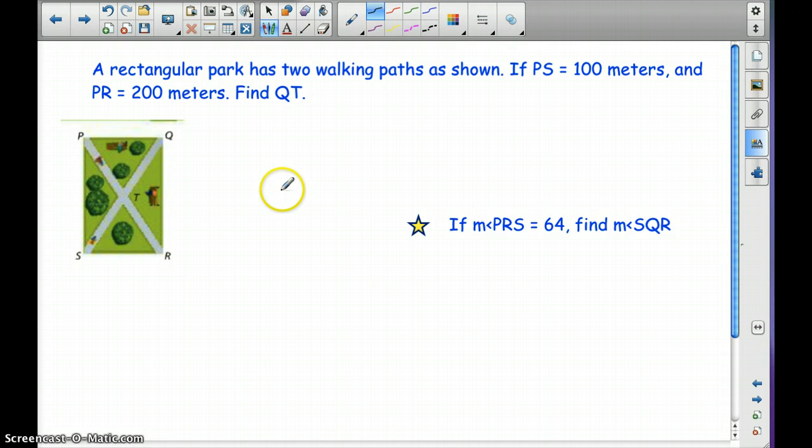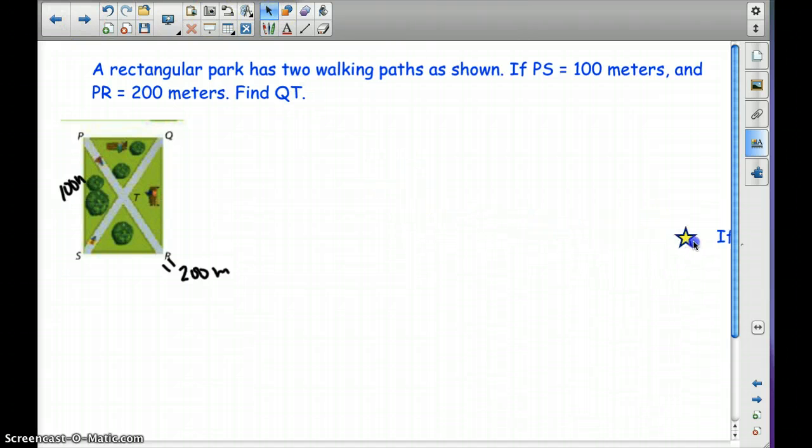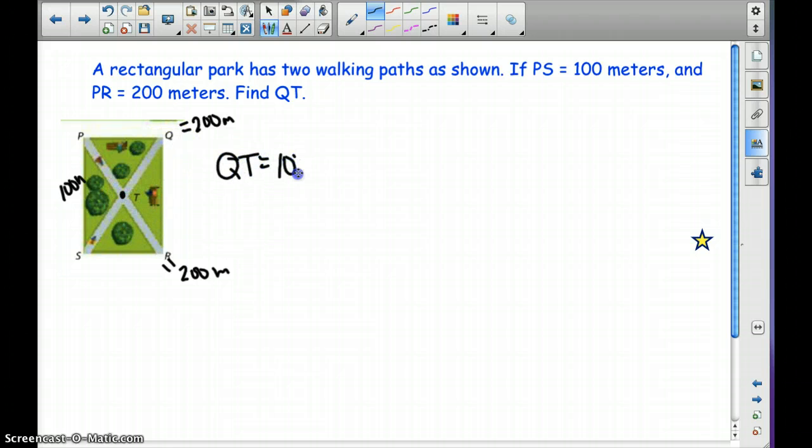A rectangular park has two walking paths as shown. If PS is 100 meters and PR is 200 meters, find QT. By our theorems, we know that the diagonals are equal to one another. So if PR is 200, SQ is also 200, and we know that they bisect each other, so QT has to be 100 meters.